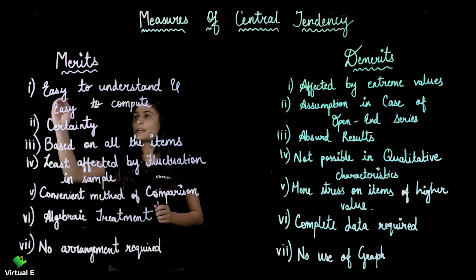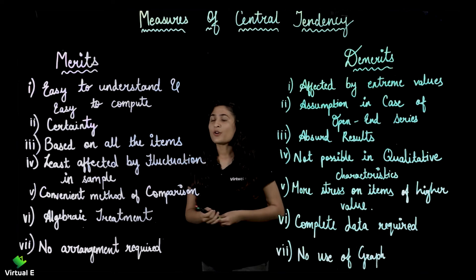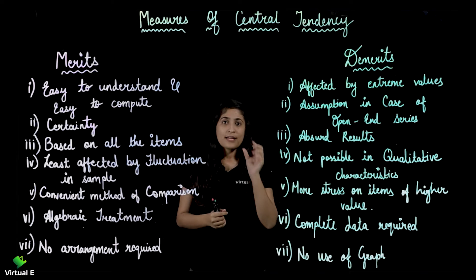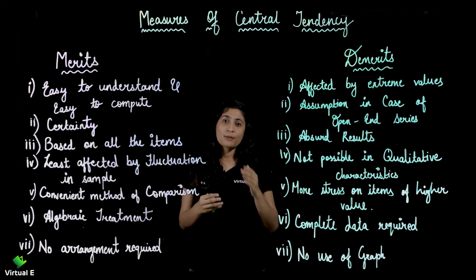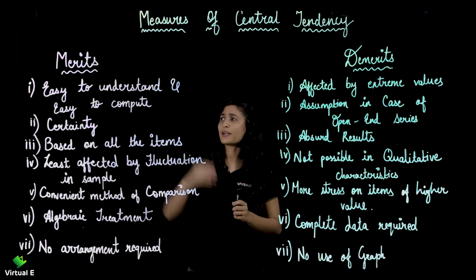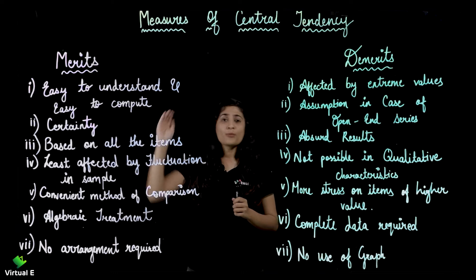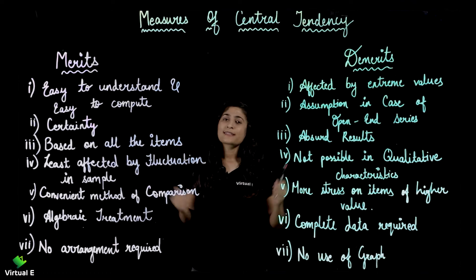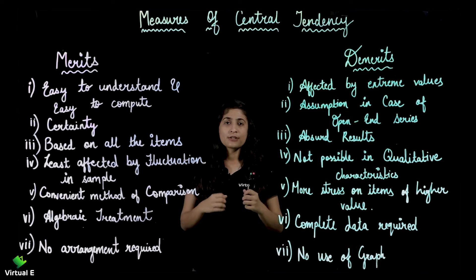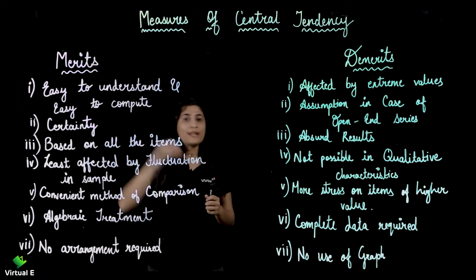The first merit is easy to understand and easy to compute. As we all know, mean is a single value. It is not complicated for understanding a single value. So it is easy to understand and it is based on formulas. Formulas involve multiplication, division, subtraction — so it is easy to compute that way.